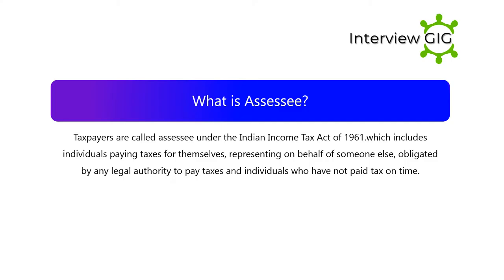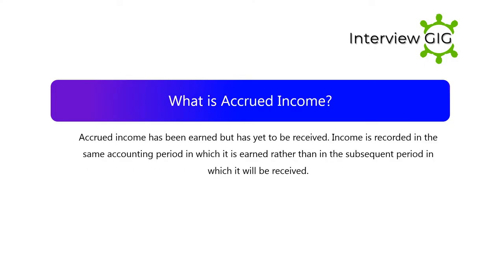What is an assessee? Taxpayers are called an assessee under the Indian Income Tax Act of 1961, which includes individuals paying taxes for themselves, representing or on behalf of someone else, obligated by any legal authority to pay taxes, and individuals who have not paid tax on time. What is accrued income? Accrued income has been earned but has yet to be received.